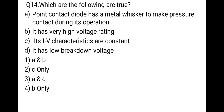The next question: which of the following are true? Option A: a point contact diode has a metal whisker to make pressure contact during its operation. Option B: it has very high voltage rating. Option C: its IV characteristics are constant. Option D: it has low breakdown voltage. The correct options are A and D — a point contact diode has a metal whisker for pressure contact and has a low breakdown voltage.